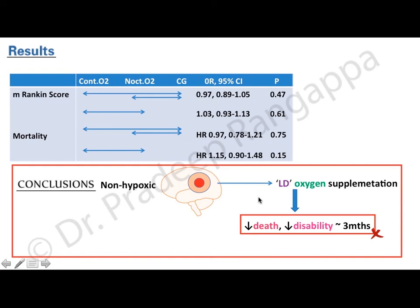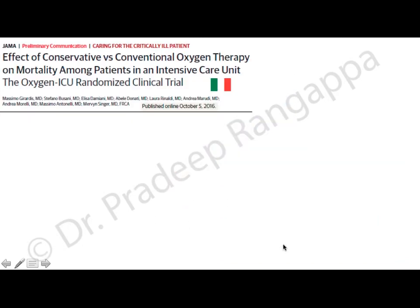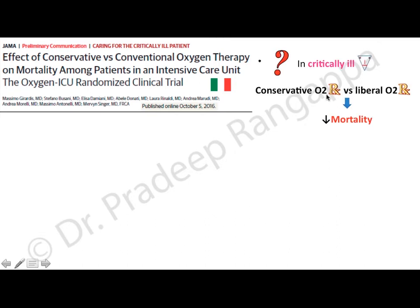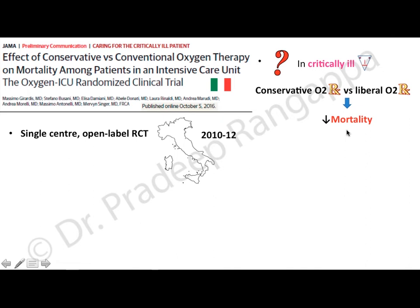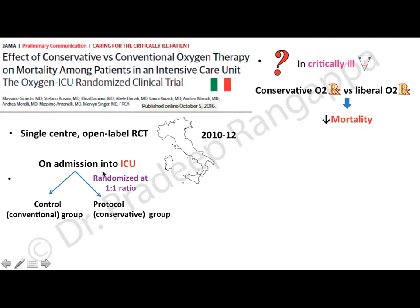Then came a large and striking study: the Oxygen-ICU randomized clinical trial from Italy, which looked at the effect of conservative versus conventional oxygen on mortality among all ICU patients. The question was whether all critically ill patients need oxygen. This was a single-center open-label randomized controlled trial done in Italy between 2010 and 2012, randomizing patients on ICU admission into a conventional (liberal) oxygen group or a conservative oxygen group.